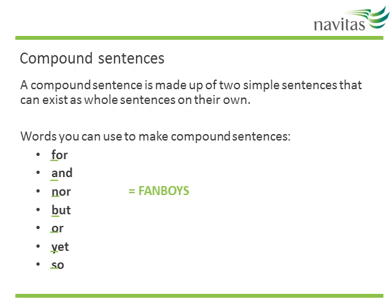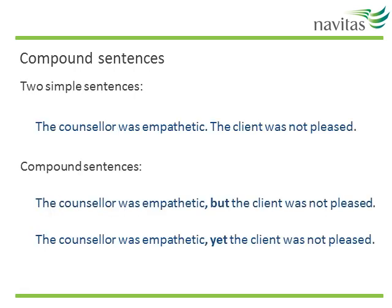Let's now take a look at some example compound sentences using these linking words. In this example we have two simple sentences: 'The counsellor was empathetic' and 'The client was not pleased'. You can join these sentences together with BUT: 'The counsellor was empathetic, but the client was not pleased.' Or you could use YET: 'The counsellor was empathetic, yet the client was not pleased.' As you can see, in both of these cases the linking words mark a contrast. Also note the comma in the sentence before the linking word.